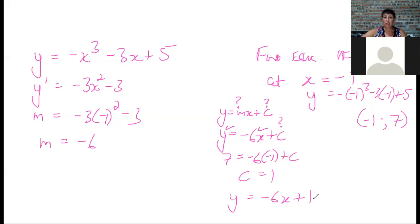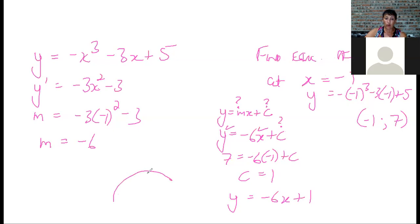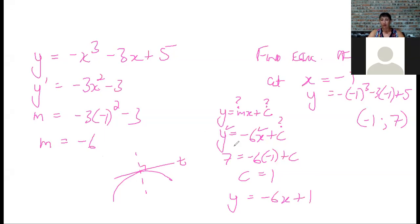For the normal at the same point — a normal is perpendicular to the tangent — use the negative reciprocal gradient. If the tangent gradient is minus 6, the normal gradient is plus 1/6. Substitute the same point and solve for c as usual. That is the only difference between a tangent and a normal question.